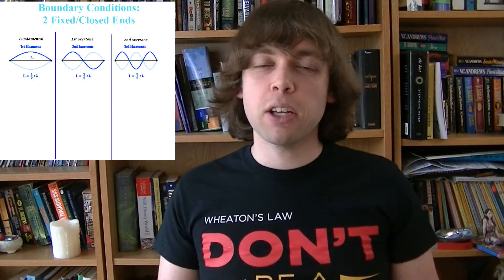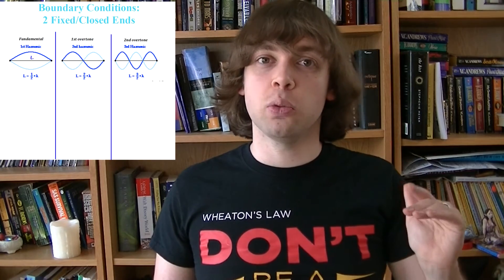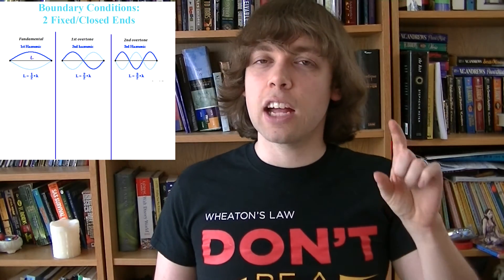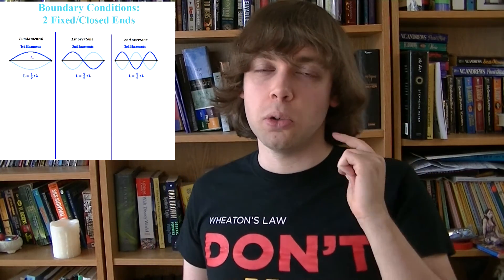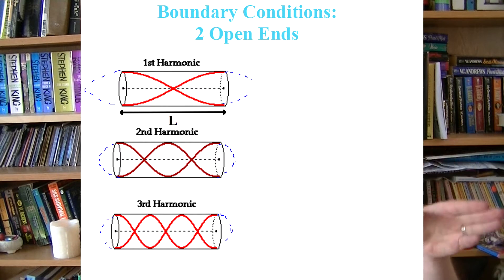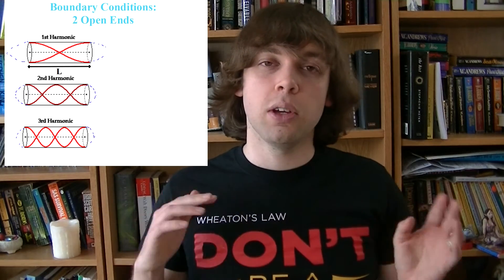When you pluck a string you create a mixture of all of these standing waves, but the main one you create is the first one — the fundamental mode or the first harmonic. That's the actual note that you hear; that's the frequency that gives you the musical note you play. An instrument like a flute that has two open ends creates standing waves where an open end always has to contain an anti-node, and again it's the first harmonic that gives you the musical note. The others are supplementary sounds that you hear on top.